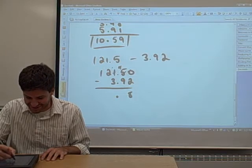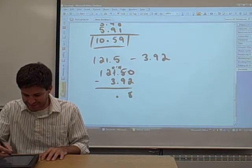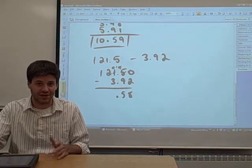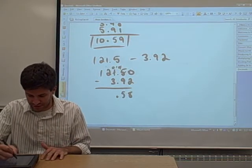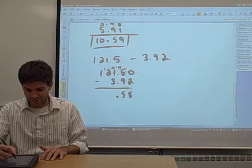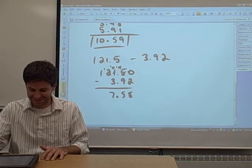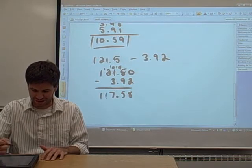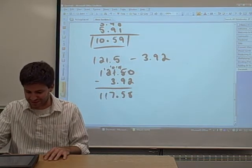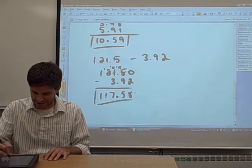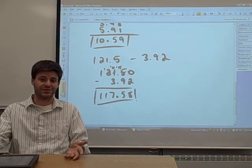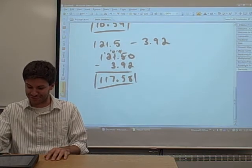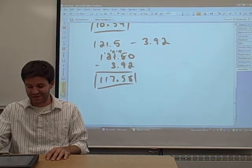4 minus 9. You have to borrow again. That's a 5. I'm surprisingly bad at subtraction for a math teacher. Borrow again. 10 minus 3 is 7. And then your 11 minus 0 is just 11. So, that should be your final answer. And I'll be checking this with the calculator, to be honest, when this video is over.